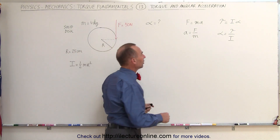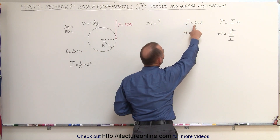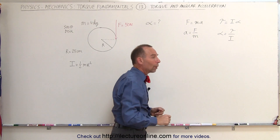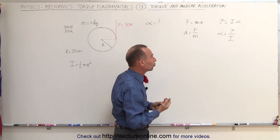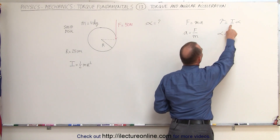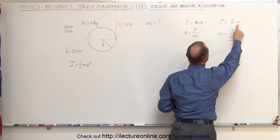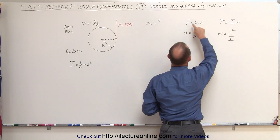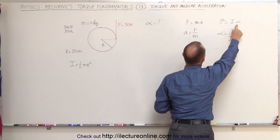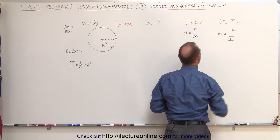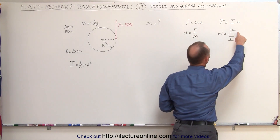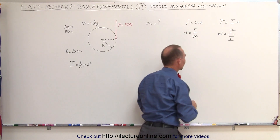Remember Newton's second law where you have F equals ma, which means acceleration is equal to the force divided by the mass. Well in rotational motion we can say that the torque applied is equal to the moment of inertia times the angular acceleration. Notice that the torque takes the place of the force, the moment of inertia takes the place of the mass, and the angular acceleration takes the place of the linear acceleration, which means that the angular acceleration is equal to the ratio of the torque divided by the moment of inertia.